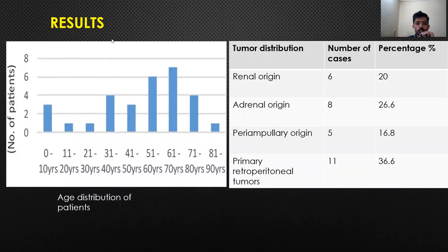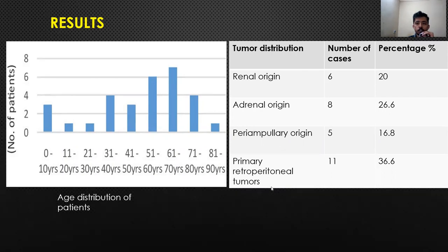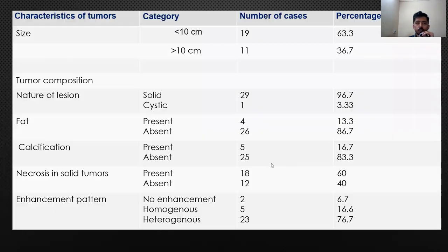Let's come to the results. A bar graph represents the age distribution of patients. In my study, there was a peak incidence in the sixth and seventh decade age groups. On the right-hand side, tumour distribution is shown — whether it is of renal origin, adrenal origin, peri-ampullary origin, or primary retroperitoneal tumour. In my study, 36.6% of cases were primary retroperitoneal tumours.